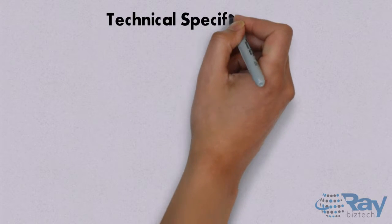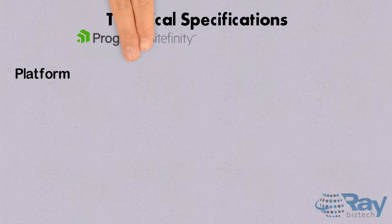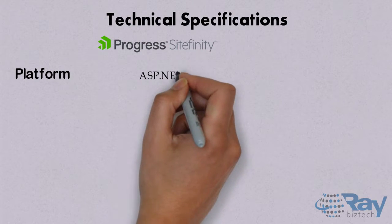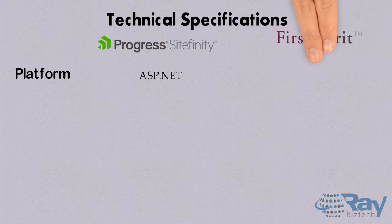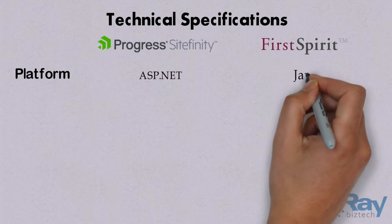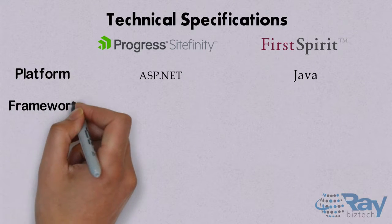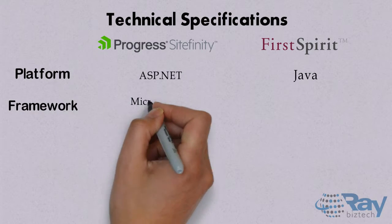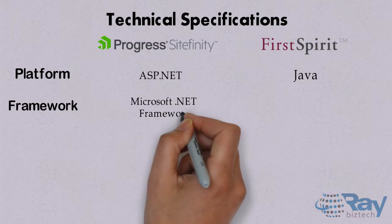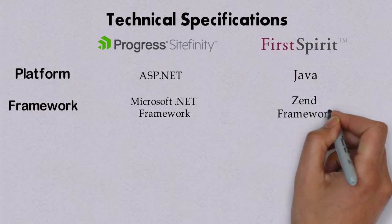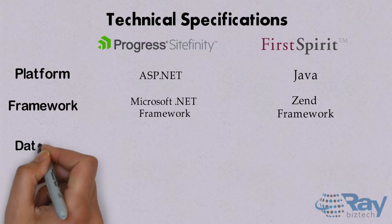Technical Specifications. Platform: for Sightfinity it is ASP.NET and for First Spirit it is Java. Framework: it is Microsoft .NET Framework for Sightfinity and Zend Framework for First Spirit.